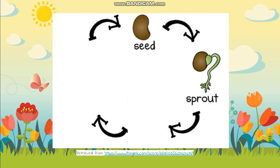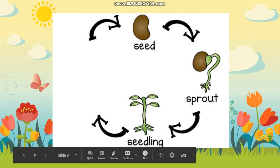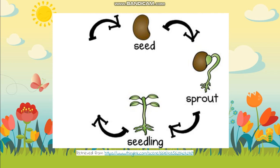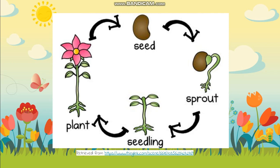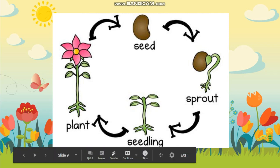Then you will have a seedling, which means the seed now has roots, a stem, and leaves. It keeps growing up, and in the end as it keeps growing we will have the adult plant, and sometimes it has flowers. So we have seed, then sprout, then seedling, and in the end an adult plant — that's how the seed grows up.